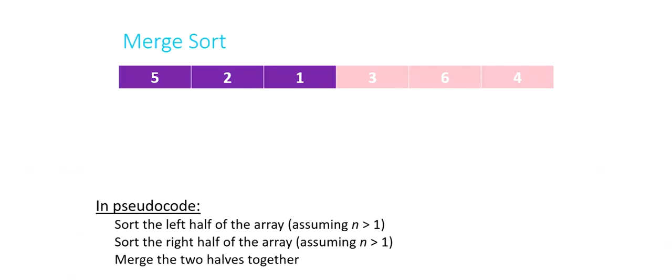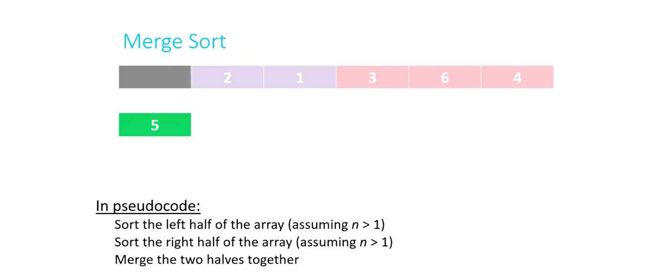So we go back to our merge sort steps again. If I don't know how to sort the left half, I'll just start again: sort the left half of this sub-array. I'm arbitrarily deciding that when I can't divide evenly, the left half will be smaller. So I'm left with a single element — the five. How do I sort a one-element array? A single-element array is necessarily already sorted, so we call that sorted and set it aside.